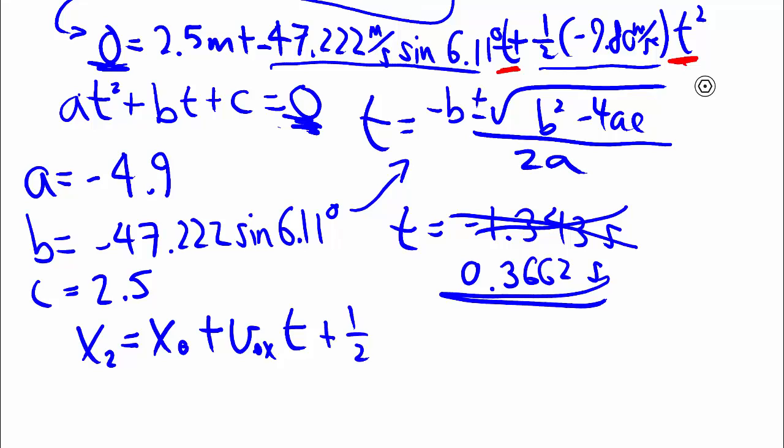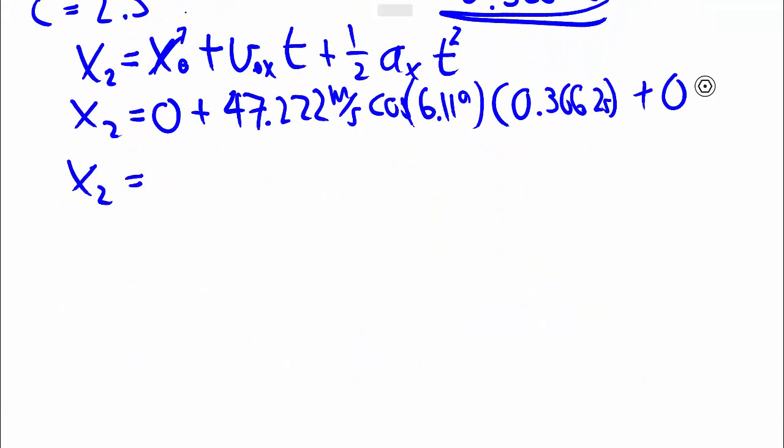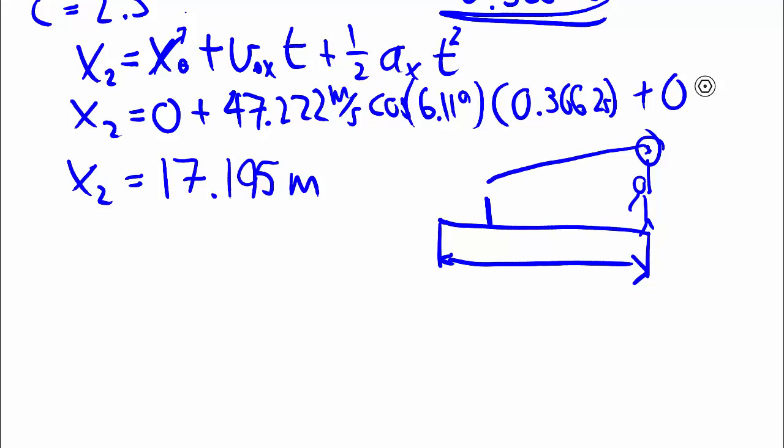With our time, we sub it into my x kinematics equation for position and we can get what we need. x0 is 0, so x2 is equal to 0 plus 47.222 meters per second cos 6.11 degrees times this time that we're given, or we just found out, plus 0. And we end up getting that x2 is 17.195 or so meters. Well, what does that mean? Thinking back to the diagram, what we have found is that from here, from the service line clear to the net to the landing spot is 17.195. But that's not what we're ultimately interested in.